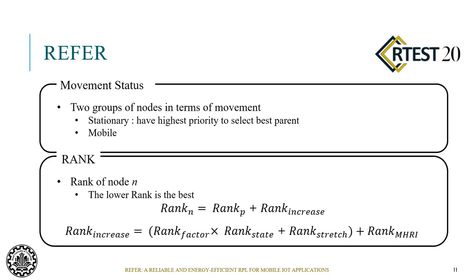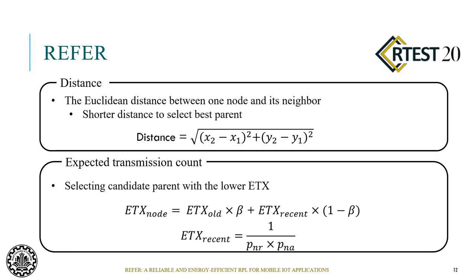There are two groups of nodes in terms of movement: stationary and mobile. In Prefair, for selecting parents, static nodes have the highest priority to be selected by each node in their path toward the sink node. The rank of the node is calculated according to a defined equation, and Prefair prefers to choose the node with the lower rank. The distance between a node and its candidate parent is the third metric — the candidate parent providing a shorter distance is more suitable to be selected as the parent node.